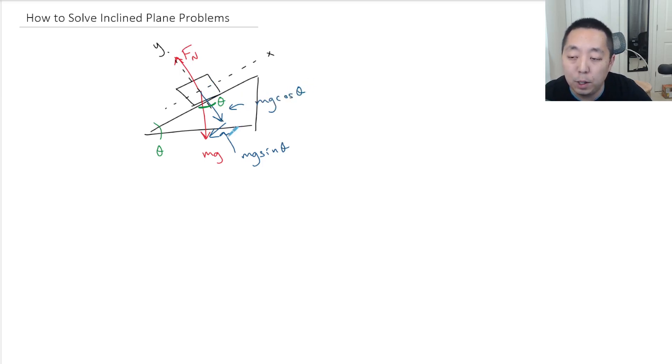And you want to decompose them that way so you can do your net force in the x and y direction. So inclined planes are exactly the same—it's just the axes have been rotated so that the x direction is parallel to the ramp and the y direction is perpendicular to the ramp. Now I want to emphasize this is only true if the acceleration is up and down the ramp, which it is most of the time but not all of the time.